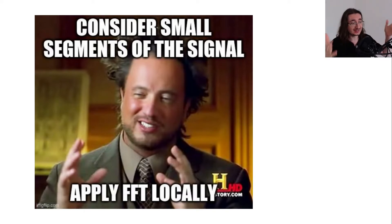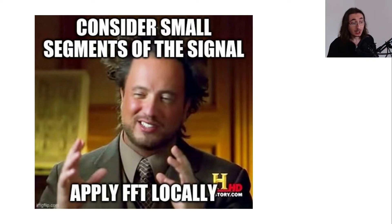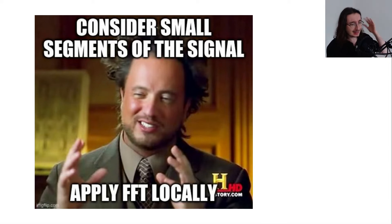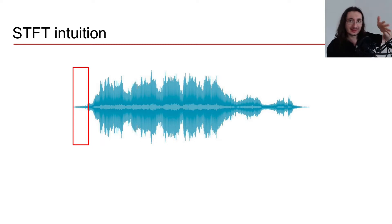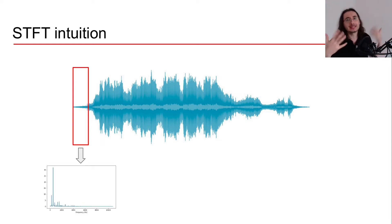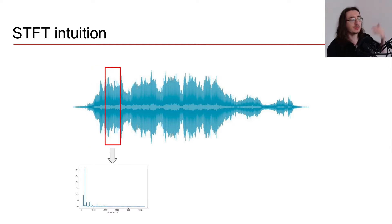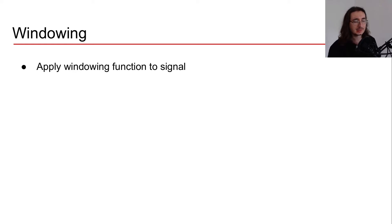The high-level idea of the STFT is that instead of performing the Fourier transform across the whole duration of the signal, we consider small segments or chunks — technically called frames — and then apply a Discrete Fourier Transform to each frame. So we start with an audio signal, consider the first frame, apply the DFT to get a magnitude spectrum, then slide to the next frame and apply the DFT again, and repeat through the entire signal. One way to derive these segments is through windowing.